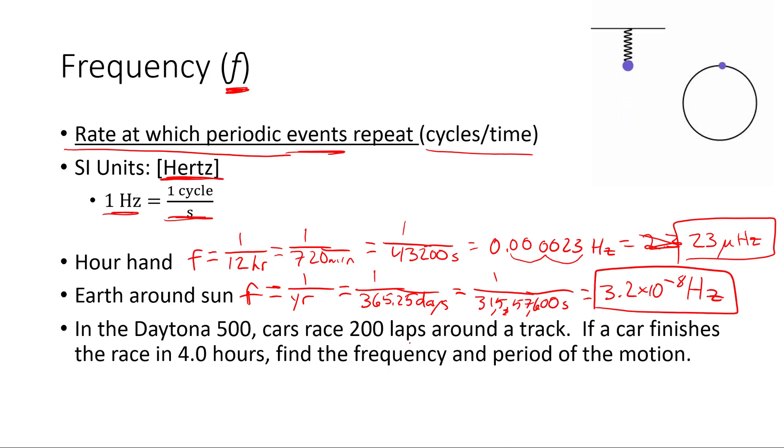In the Daytona 500, cars race 200 laps around a track. If a car finishes the race in 4.0 hours, find the frequency and period of the motion. Well, the frequency is cycles per second. It does 200 cycles, or cycles over time, in 4.0 hours. So it's just going to be 200 over 4, which is about 50 per hour. I'm not writing it in hertz because it doesn't seem relevant in this case. 50 cycles per hour. And the period is the time for each cycle, so it's going to be 4.0 hours over 200 laps. 4 over 200 is 0.02 hours. You might want to write that in minutes. So there's 60 minutes in an hour. It's going to be 1.2 minutes is our period.